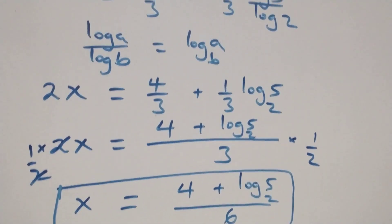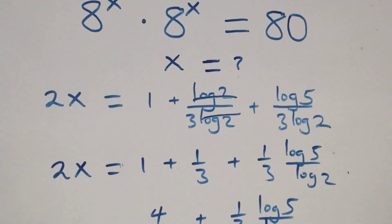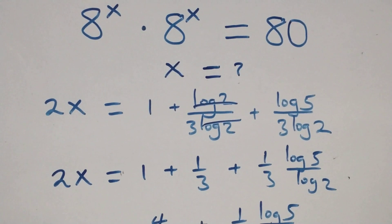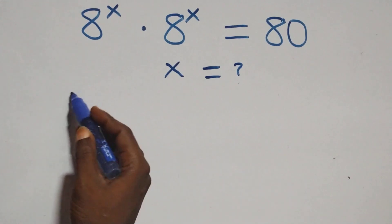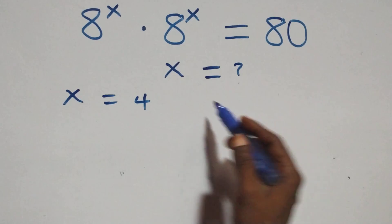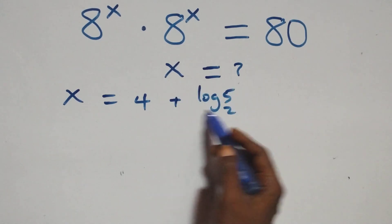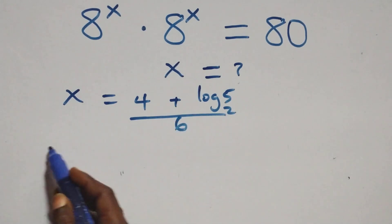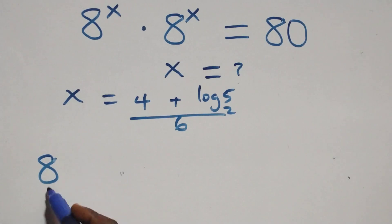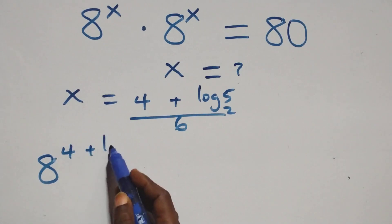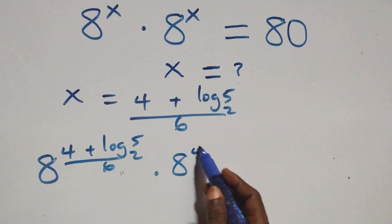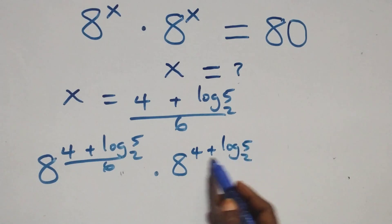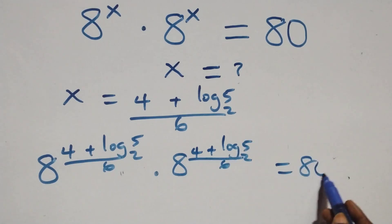Then let's check if this satisfies the given problem. We substitute the value of x, which is (4 plus log base 2 of 5) all over 6. So we have x equals (4 plus log base 2 of 5) over 6, substituted back in, and this should equal 80 on the right-hand side.